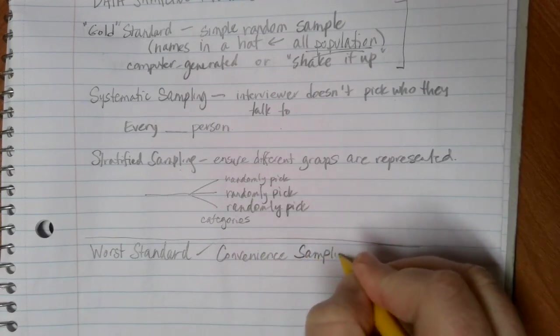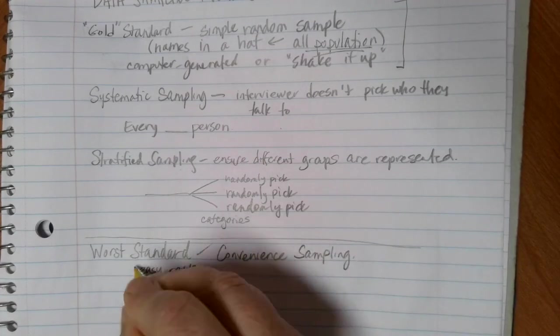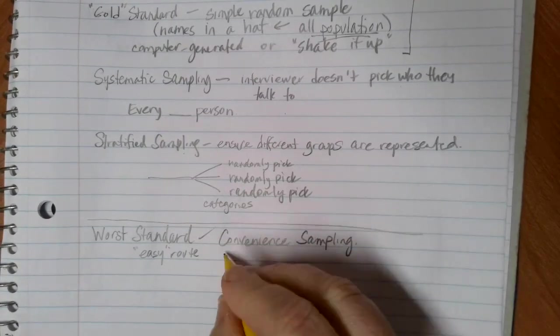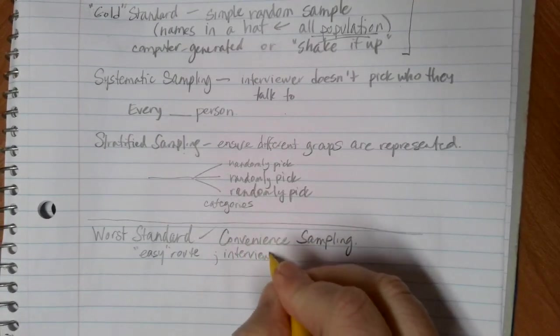And the basic idea behind convenience sampling is you're going to take the easy route. I'm going to talk to whoever it's easy or convenient for me to talk to. And this happens when the interviewer makes the choice about who they're going to talk to.